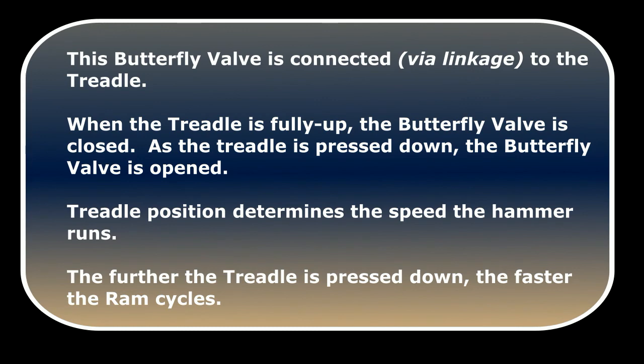This butterfly valve is connected via linkage to the treadle. When the treadle is fully up, the butterfly valve is closed. As the treadle is pressed down, the butterfly valve opens. The treadle position determines the speed the hammer runs. The further the treadle is pressed down, the faster the ram cycles.